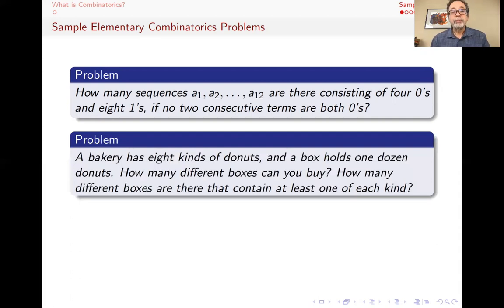Here's another problem. You go to a bakery and you want to get donuts. A box of donuts has a dozen donuts. And you want to know how many different boxes you can buy. How many different boxes of donuts can you make? And what about if you want every box to have at least one of the eight kinds and then the other four you want to play around with? So that's another counting problem.